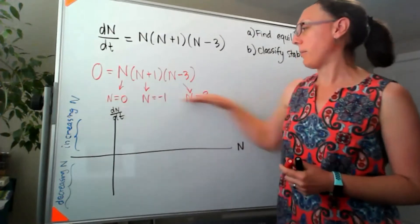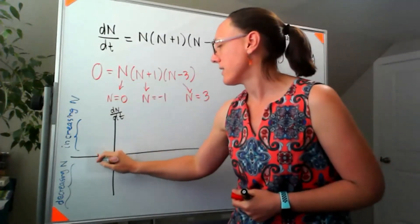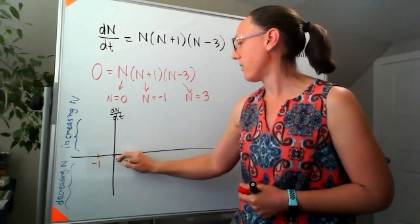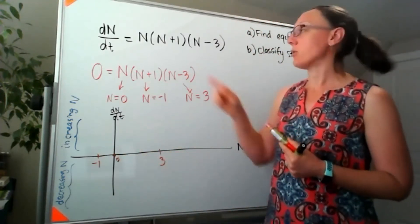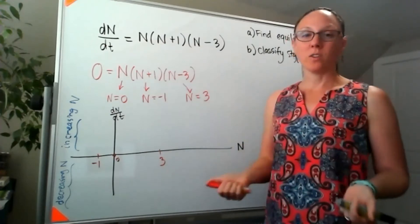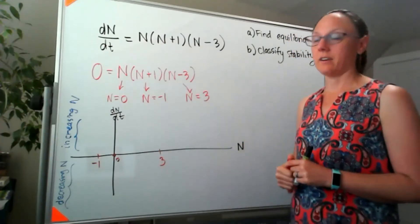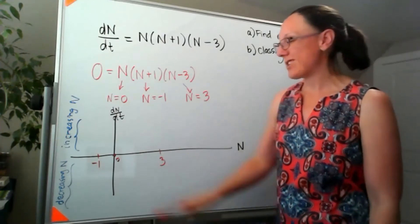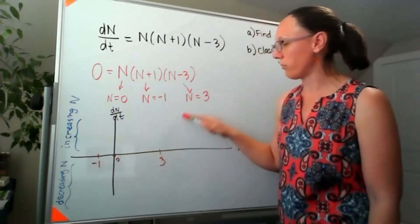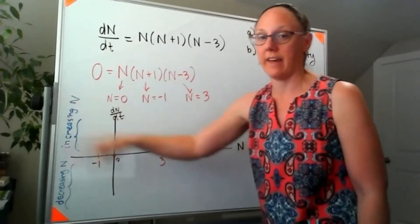Next up, I'm going to go ahead and plot those equilibrium points. So let's call that negative one and call that zero and call that three. And then I need to sketch this graph. So this is a cubic and I know that I've got three intercepts. So it's either going to kind of wiggle through like that or it's going to wiggle through like that.